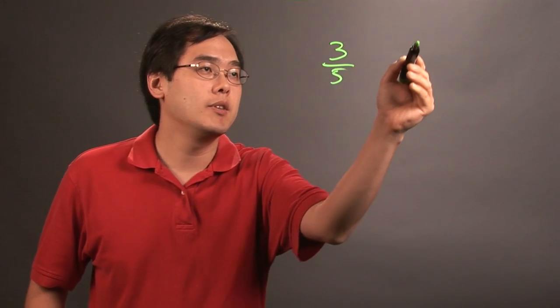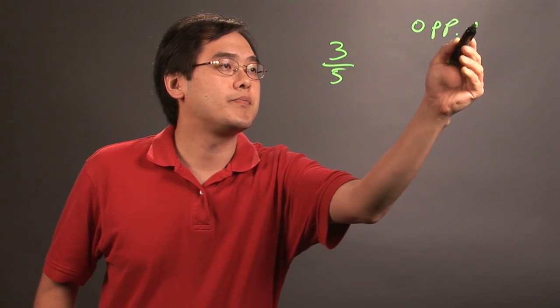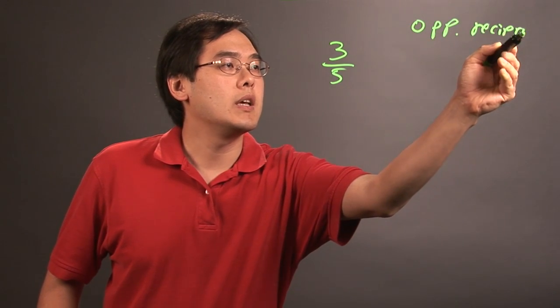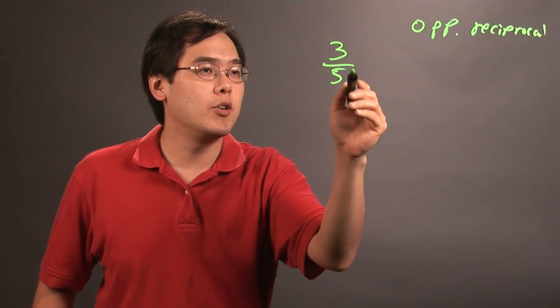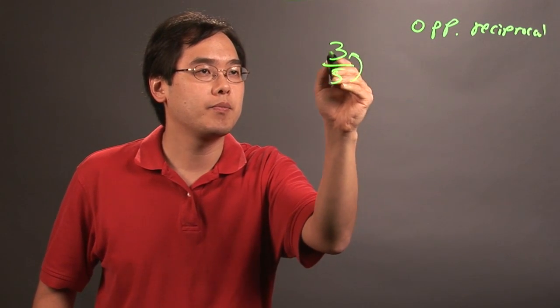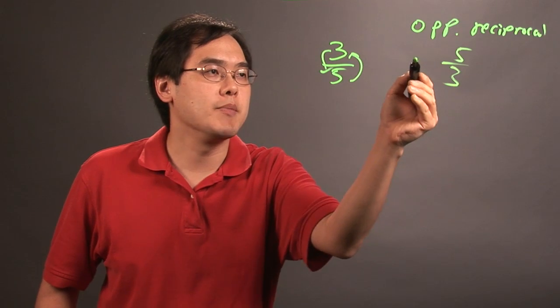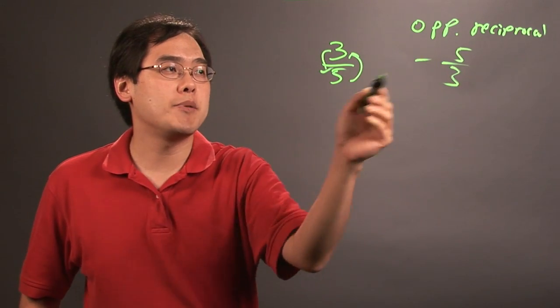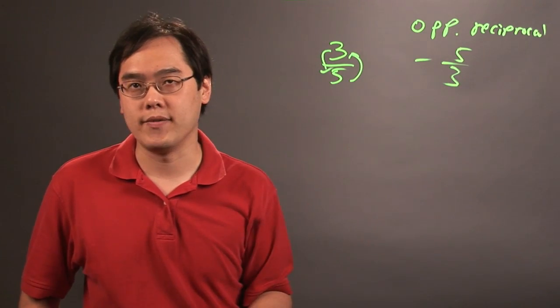So for example, if you have 3 fifths, the opposite reciprocal is going to be the same thing as the reciprocal, but different sign. So we're going to flip the fraction, so it becomes 5 thirds, but the opposite means we're going to change the sign. So the opposite reciprocal of 3 fifths is going to be negative 5 thirds.